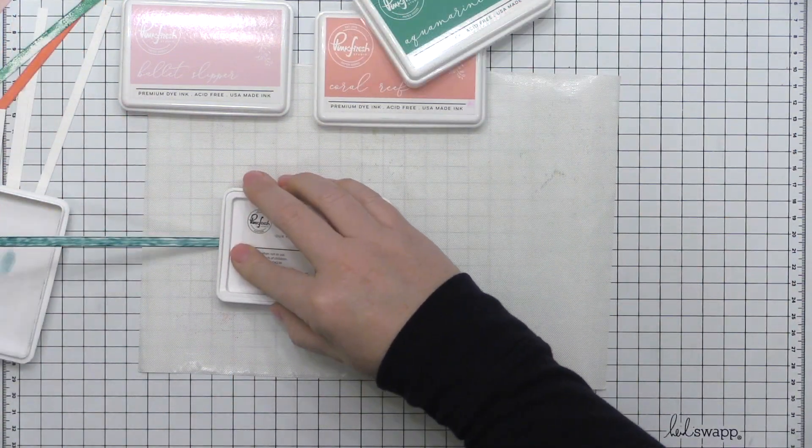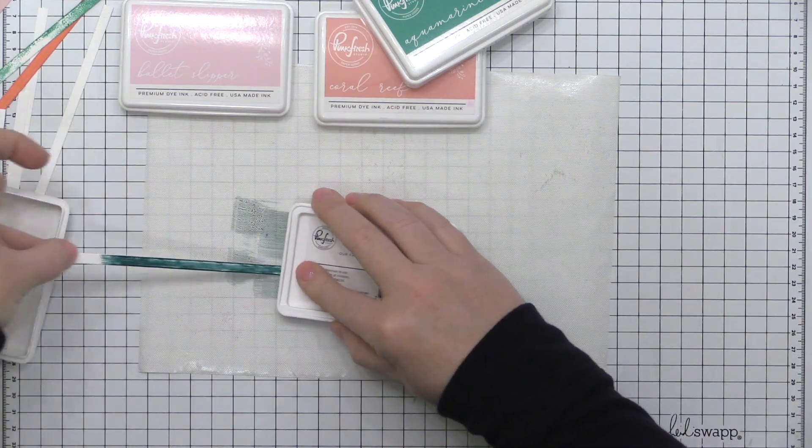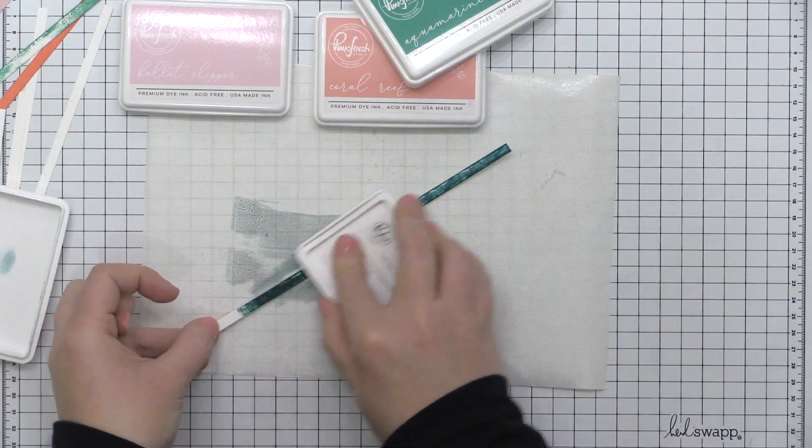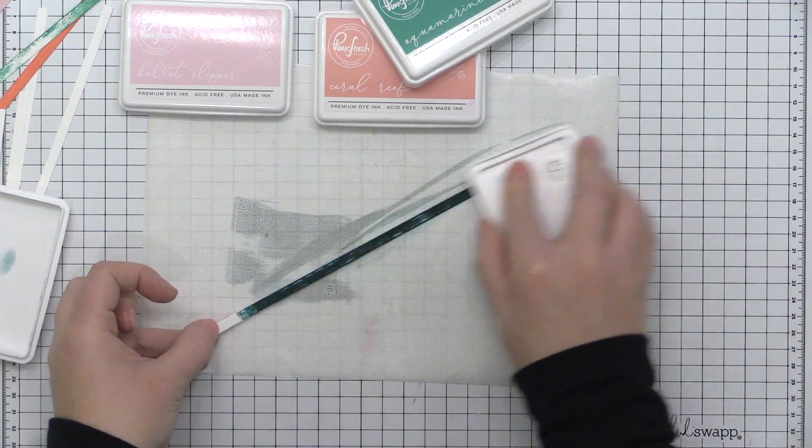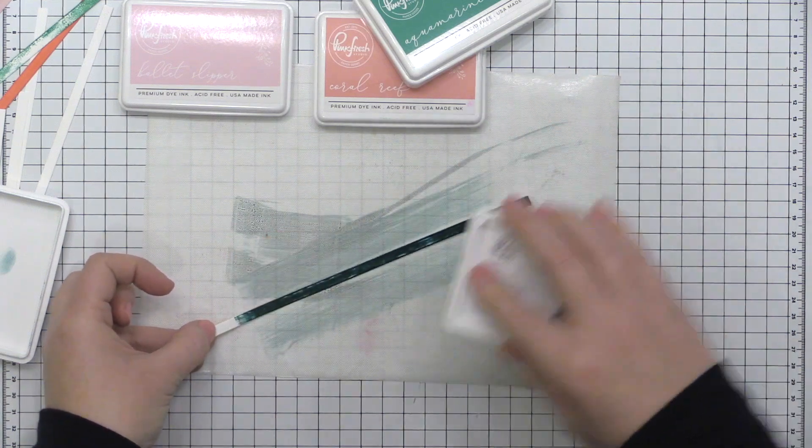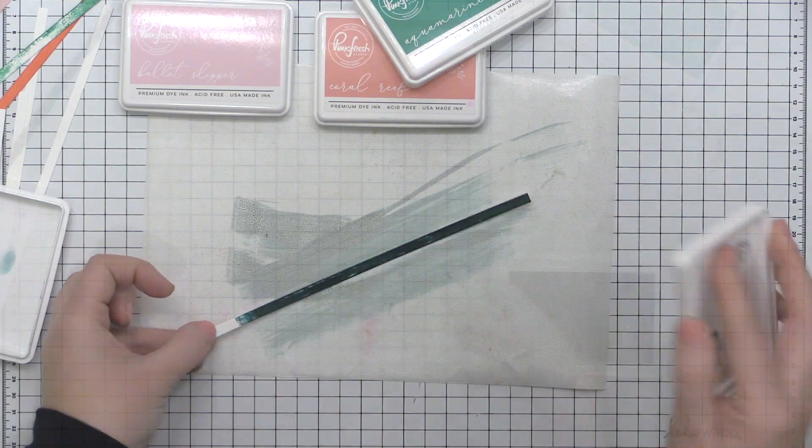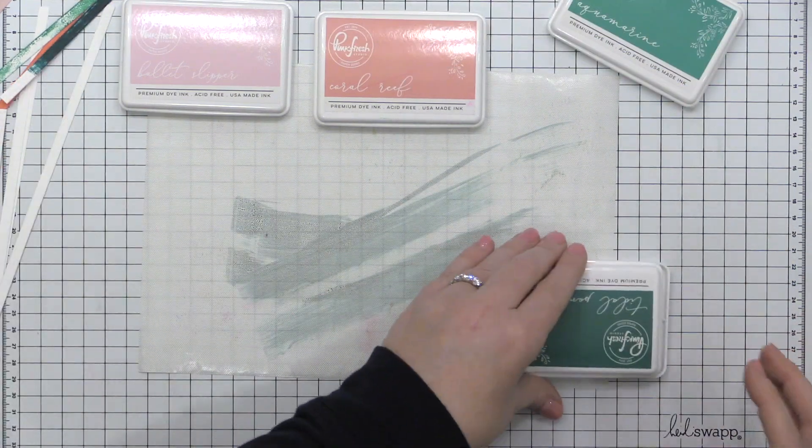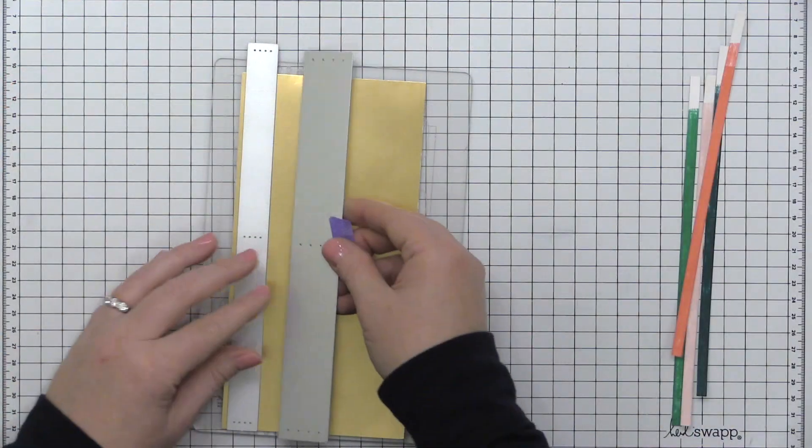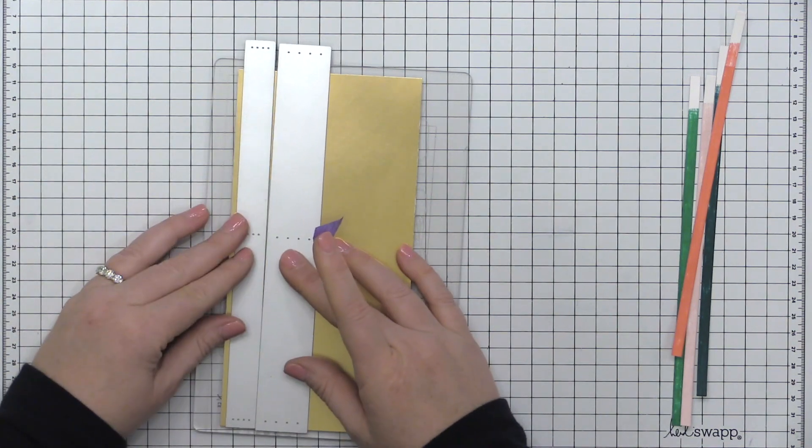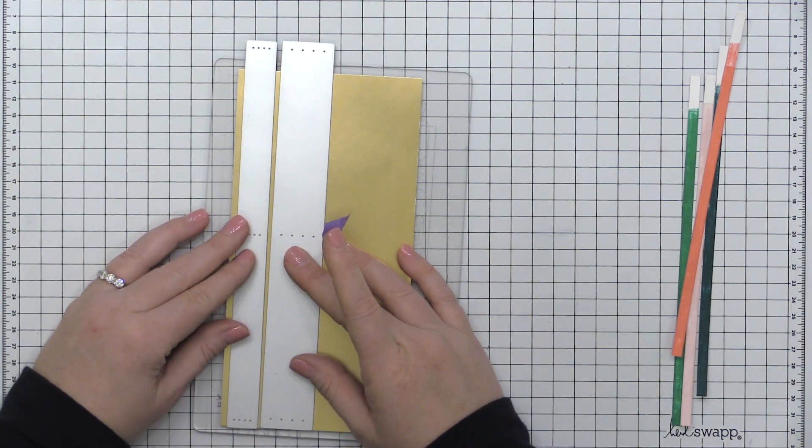Now I'm finishing off my strips with the tidal pond and this green is absolutely beautiful. It looks fabulous with these pinks and even though the ballet slipper and the coral reef are not in the same pink fresh color family or quad family they look great together as well.